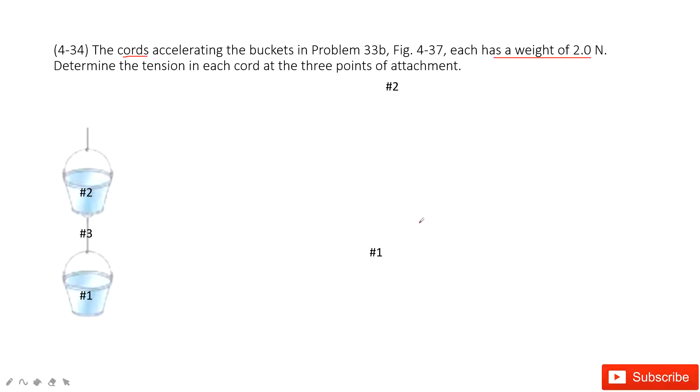So first, we look at number 1 — the steel — the gravity, and also the tension. So this tension is FT1 at the bottom.